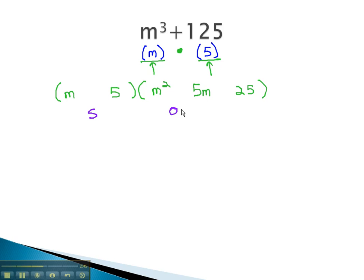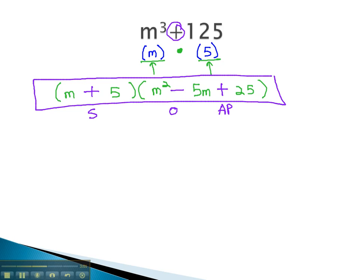Then, using SOAP, we are allowed to fill in each of the signs. This one has a plus, so same sign will be plus. Opposite sign will be minus, and AP is always positive, or always plus. We have now factored this sum of cubes.